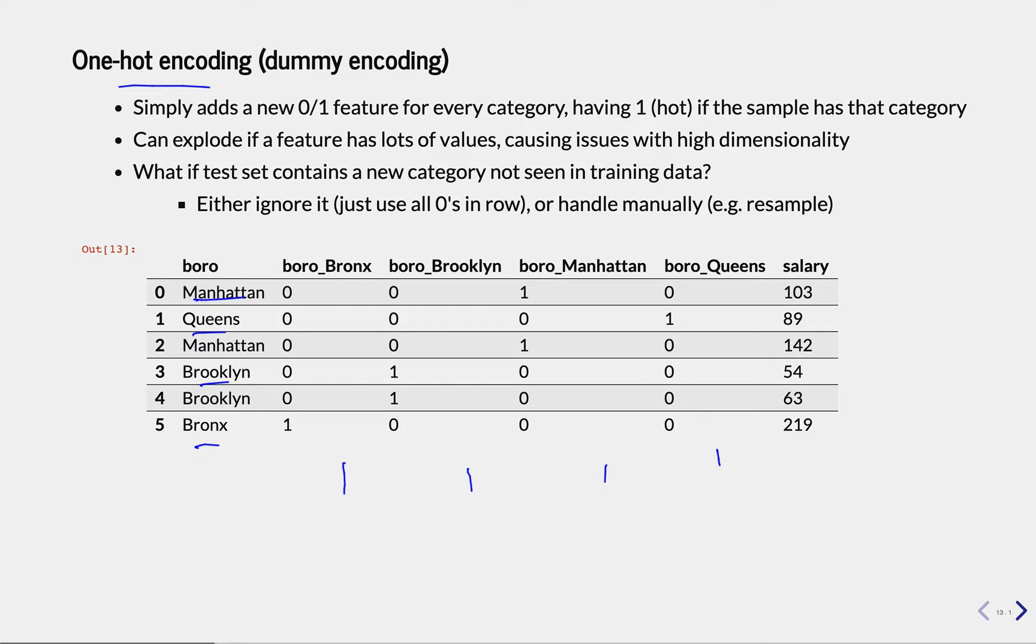I think again this is alphabetical, so first we have Bronx, and this feature will be 0 unless the category is Brooklyn, and then we add 1, and so on.